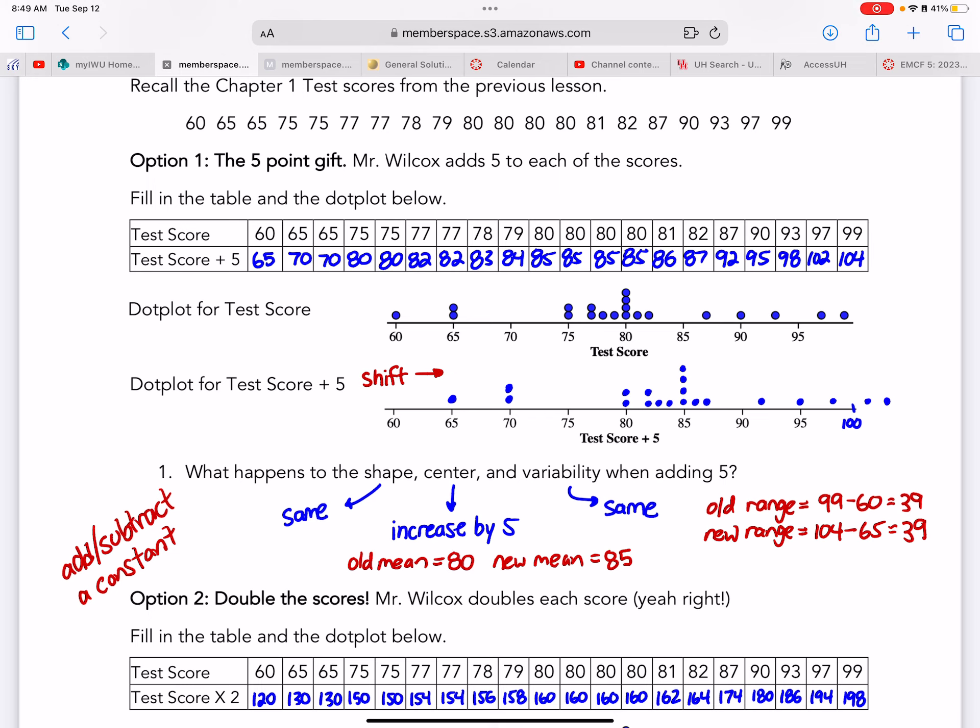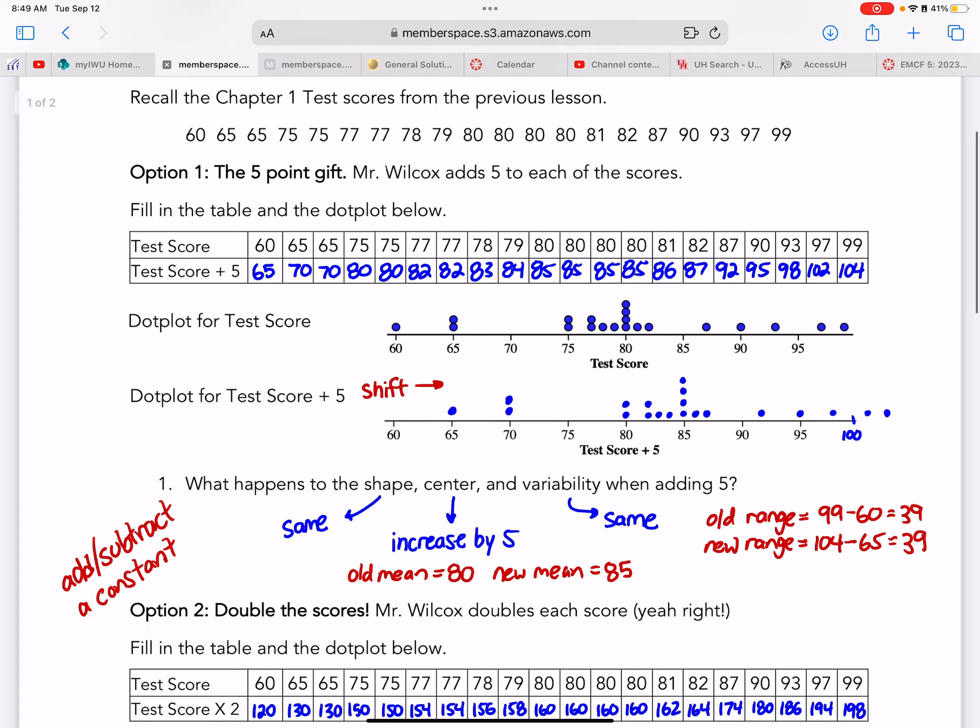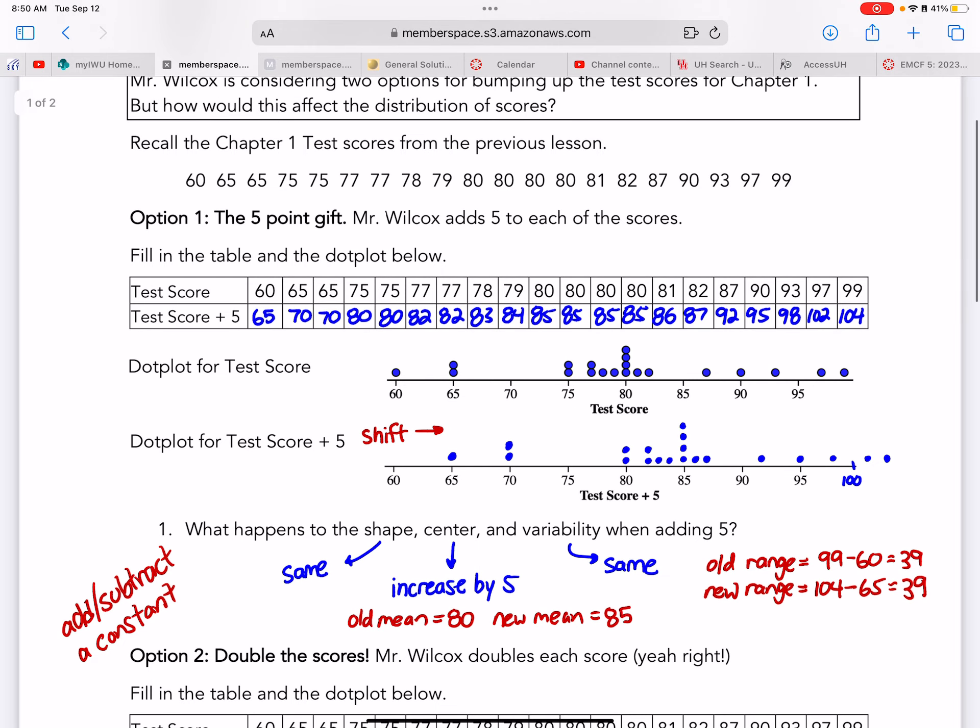My old mean was 80, and my new mean is 85. If you want to find those, of course, you can use menu 411.